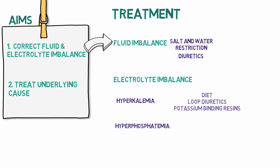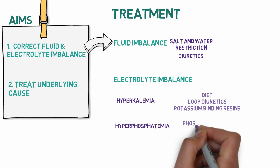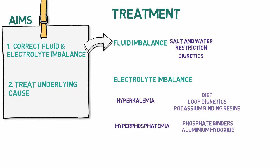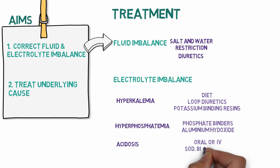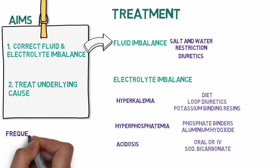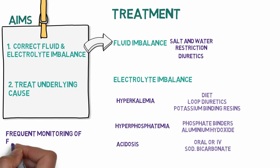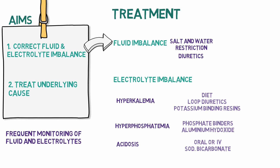Hyperphosphatemia is an important complication of ARF, managed by using phosphate binders like aluminium hydroxide, which decrease absorption of phosphate through the gut. Acidosis, if severe, can be managed by oral or IV sodium bicarbonate. Frequent monitoring of fluid and electrolyte levels of the body is also required.